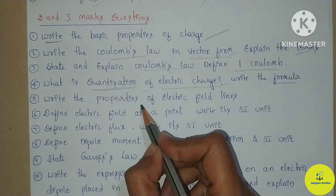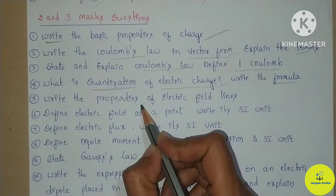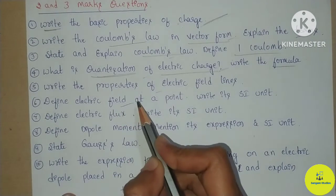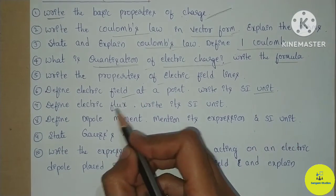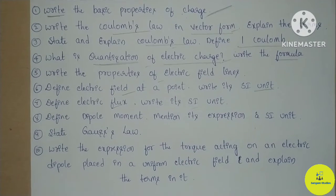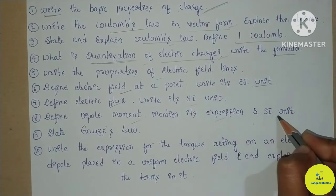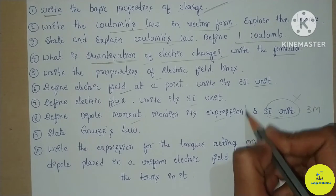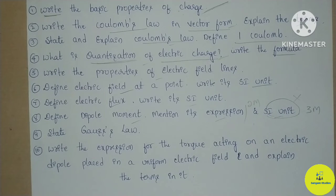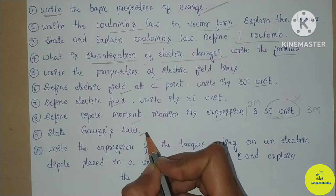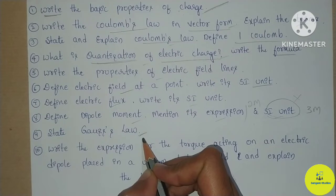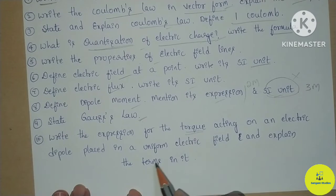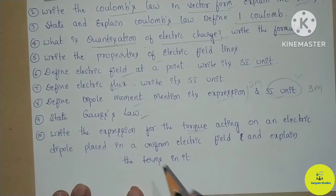Next is electric field lines properties — again, two marks needs two or three points, three marks needs three or four points. Electric field lines is two marks, electric flux is two marks, dipole moment expression is one mark, and Coulomb's law in vector form is three marks. For two marks you need around four points, and for three marks you need to explain with more points.